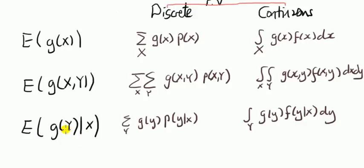For this case we'll be looking at something conditional on x. The formulas look the same except for the probability here, this probability mass function now is the conditional one. And for the continuous case the pdf, that's the conditional pdf.